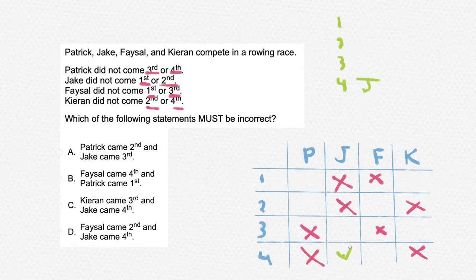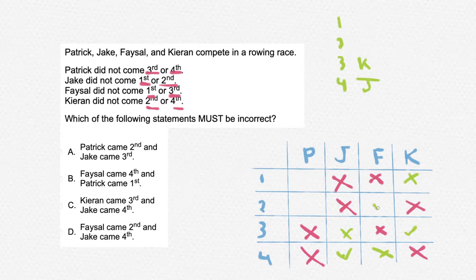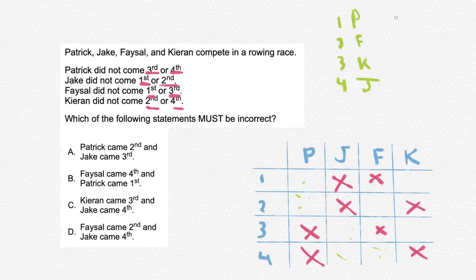First, let's assume Jake came 4th. That means we can cross out position 3 for Jake and position 4 for the rest of the players. That leaves Kirian with 3rd place, cancelling out 1st place for Kirian, leaving Faisal with 2nd place. Finally, that leaves Patrick as 1st place. This is one arrangement in which positions they came.